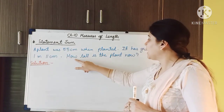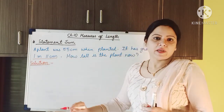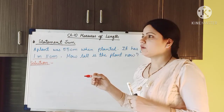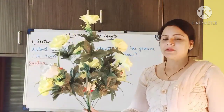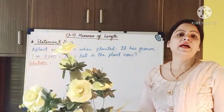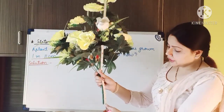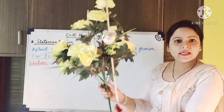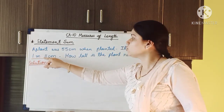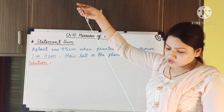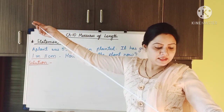So now we have to find out how tall is the plant now. This 55 centimeter is not the current length of the plant — it is describing that after planting, the plant has grown 1 meter 11 centimeter more. Suppose this is the plant and when planted the height was 55 centimeter. But now the plant has grown 1 meter 11 centimeter more — 1 meter is equal to 100 centimeter, so we have to account for 111 centimeter more.